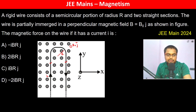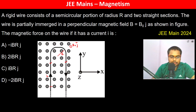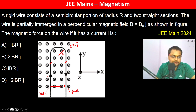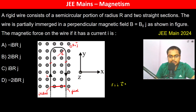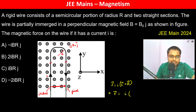Approaching the question: the wire starts and ends at two points, so the resultant length vector is from the initial to the final point. Therefore the force is F = I·L × B. Here I is given as I, and L is 2R î (in the horizontal direction), and B is B₀ĵ.